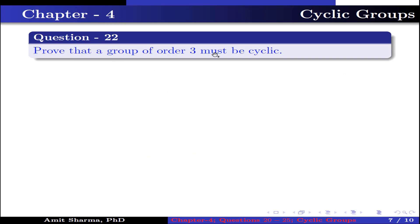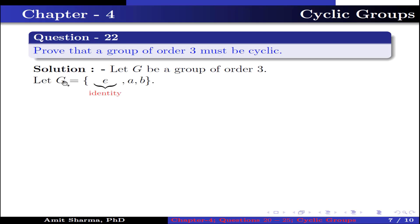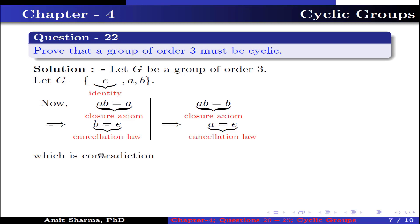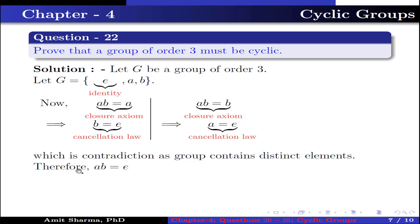Q22: Prove that a group of order 3 must be cyclic. Let G be a group of order 3 containing elements E, A, B where E is the identity. By the closure axiom, the product AB equals either A or B. This implies B equals identity or A equals identity by the cancellation law, which is a contradiction since a group contains only distinct elements. Therefore the product AB must equal identity, which implies A inverse equals B.